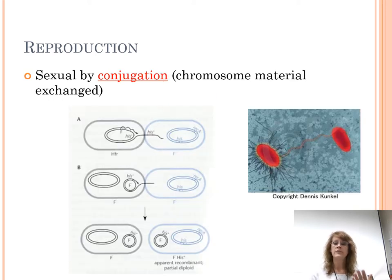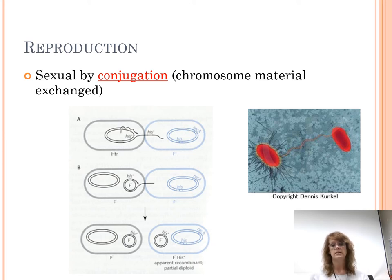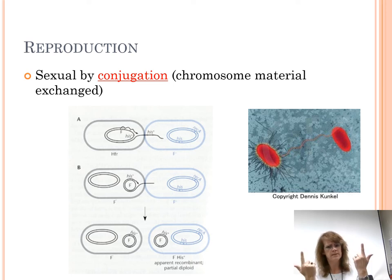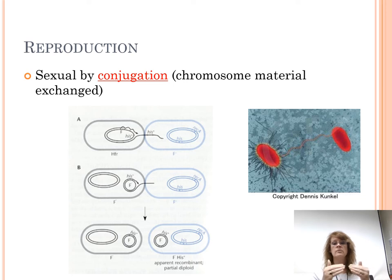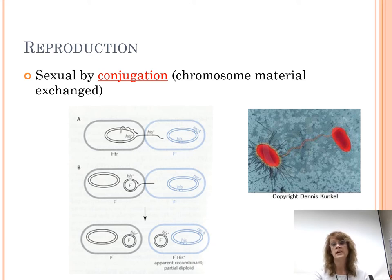People will talk about how bacteria can sexually reproduce, but that's not really what happens. When you have sexual reproduction, you have an egg and sperm that come together to make a new individual. In the case of conjugation, bacteria have the ability to attach to each other and swap pieces of DNA. They're not making offspring, so technically it's not really reproduction — but it allows for genetic variation. Two bacteria come together, swap genetic material, creating a different bacteria, but no third bacteria is created.